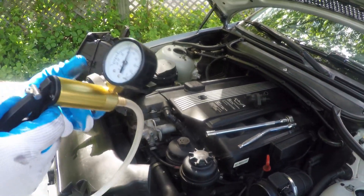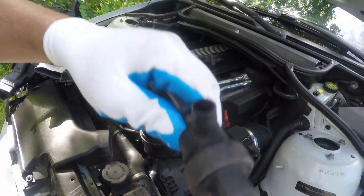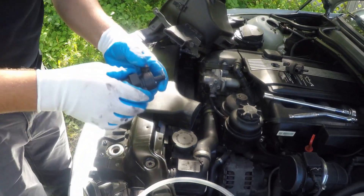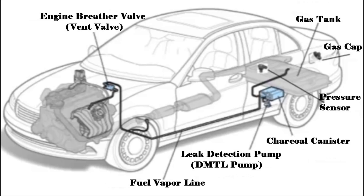The computer determines whether a leak is small, medium, or large. Here is a diagram showing where the components are located. The engine breather valve — the vent valve — is at the engine, connected via fuel vapor lines to the leak detection pump or DMTL pump, then to the charcoal canister, and from there a line goes to the gas tank. On the gas tank there is a pressure sensor that monitors the vacuum between all these lines and components. The gas cap is also monitored — if it's not tightened properly it sets a vacuum leak code as well.